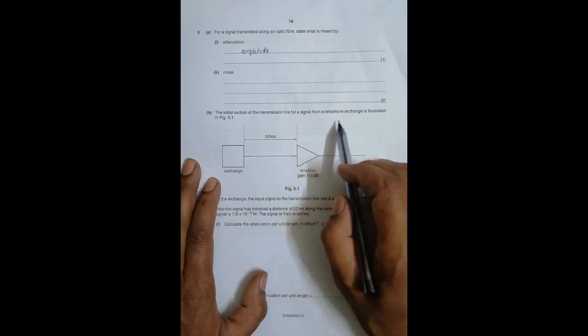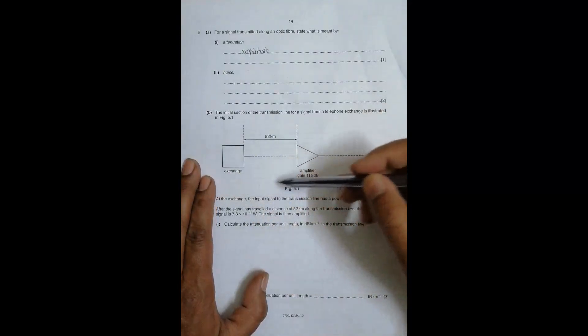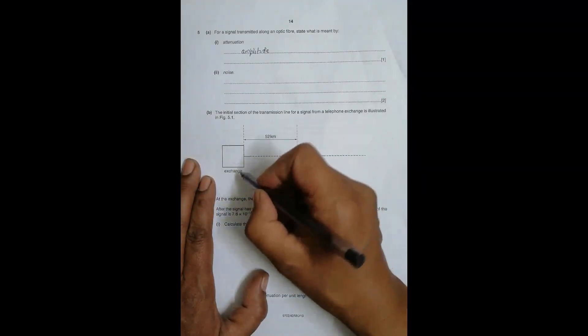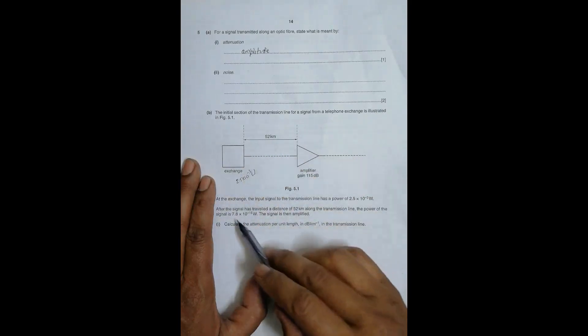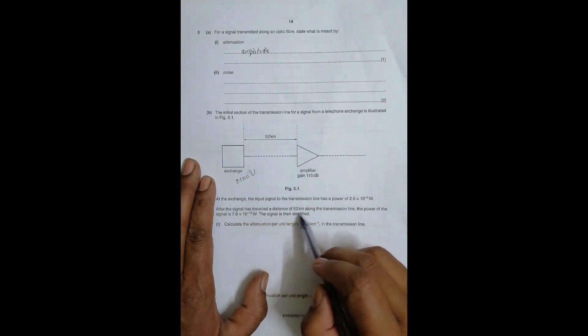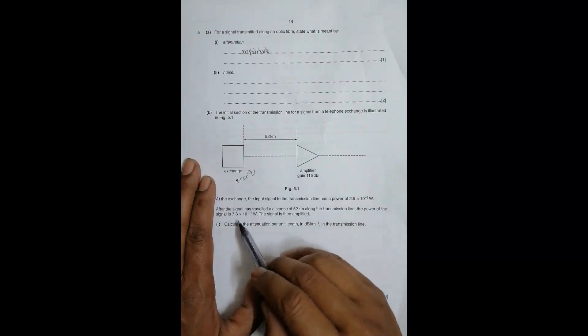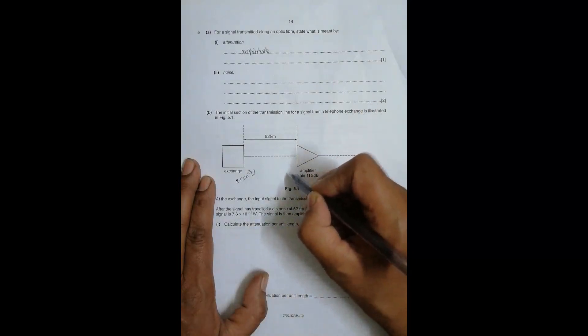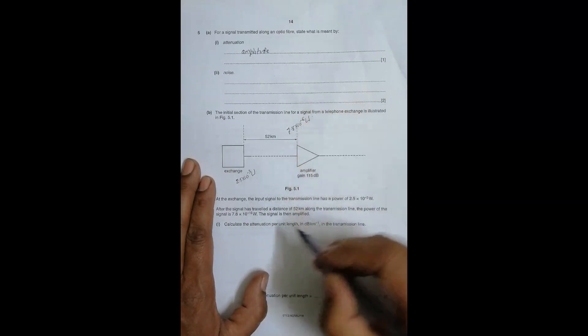The transfer line from a telephone exchange is illustrated here. At the exchange, the power is 2.5 × 10^-3 watt. After the signal has traveled a distance of 52 kilometers along the transfer line, the power of the signal is 7.8 × 10^-6 watt. The signal is then amplified.